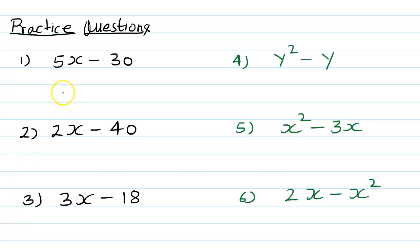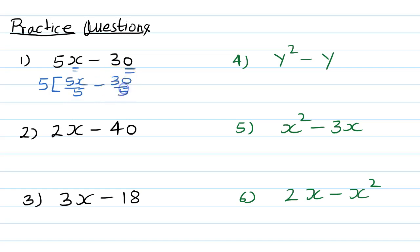Welcome back. Let's check the answers. For the first one, x is not common since it only appears in one term. 30 appears in the 5 times table, so take 5 outside. 5x divided by 5 gives x, and minus 30 divided by 5 gives minus 6, because 5 times 6 is 30. So the answer is 5(x minus 6).